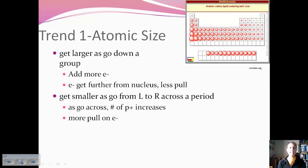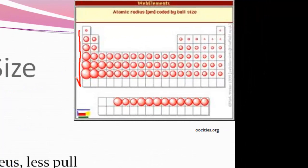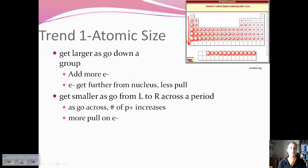So the first trend is atomic size. As you can see, as we go down a group, atomic size increases. Now this is due to the fact that we are adding more electrons, but we're also adding more protons. So you might say, well, if we're adding more protons, then they should be pulling on the electrons, making the atoms smaller, when in reality it's larger. And this is due primarily to those increase in principal energy levels.